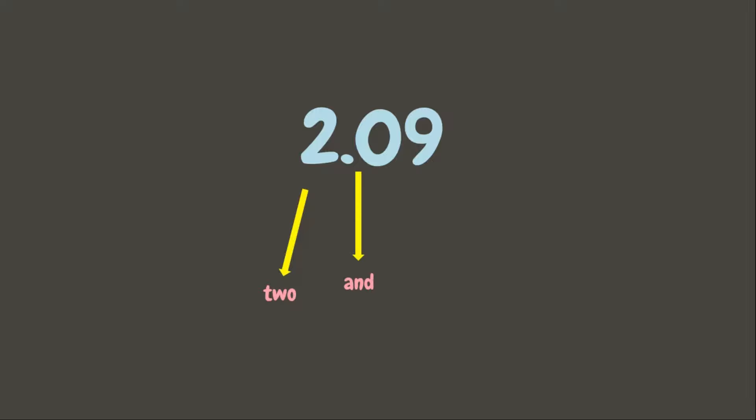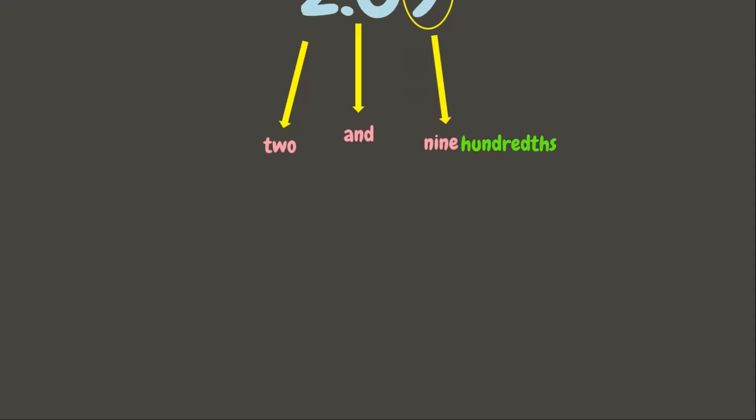Let's have another example: 2.09. First, we read the whole number which is two, then the decimal point as 'and,' and the decimal part as nine. We add the place value of the last digit, which is nine. The place value of nine in this position is hundredths. Therefore we read this decimal as 'two and nine hundredths.'